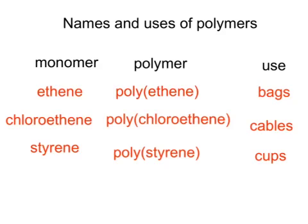There are many kinds of addition polymers. Notice how the names of the polymers are very related to the names of the monomers. First of all, we've got ethene making polyethene — notice that there are brackets around the ethene part — and polyethene, better known as polythene, is used for bags and packaging. We've got chloroethene making polychloroethene. Chloroethene used to be called vinyl chloride, so that's polyvinyl chloride or PVC, and PVC is used for making cables. And then we have styrene, which is made into the polymer polystyrene, and that's used for making cups from drinks machines.